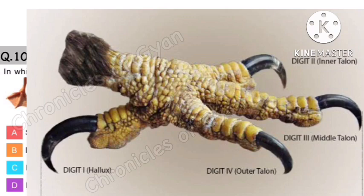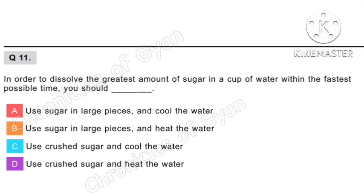Question 11. In order to dissolve the greatest amount of sugar in a cup of water within the fastest possible time, you should: Option A (large pieces, cool water) — large pieces won't dissolve in cool water fast. Option B (large pieces, heated water) — large pieces still take time. Option C (crushed sugar, cool water) — not as fast as needed. Option D: Use crushed sugar and heat the water — yes, this is the fastest way. Option D is the correct answer.